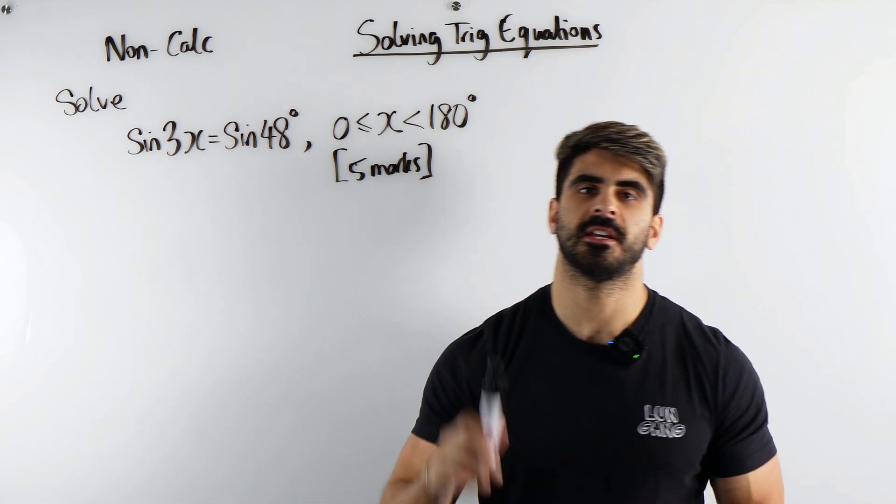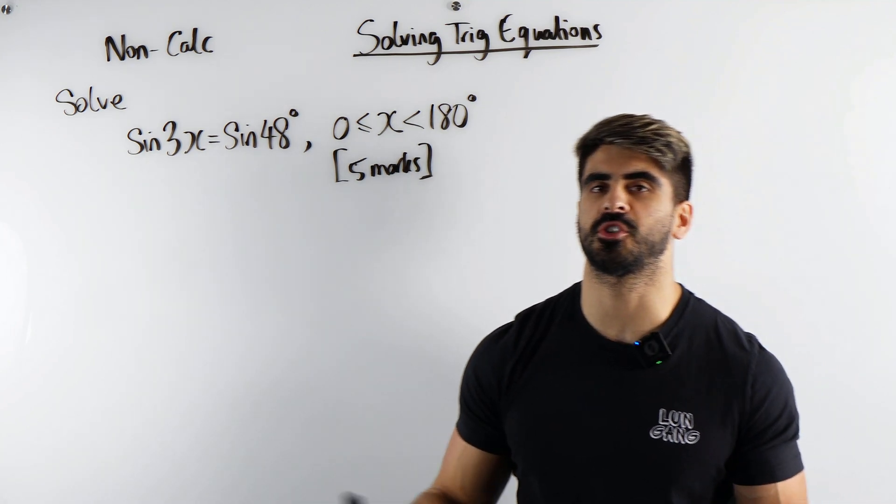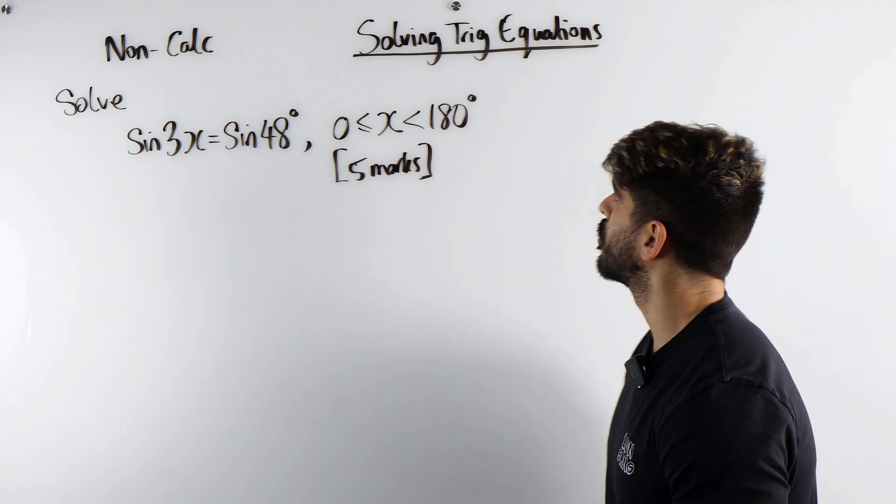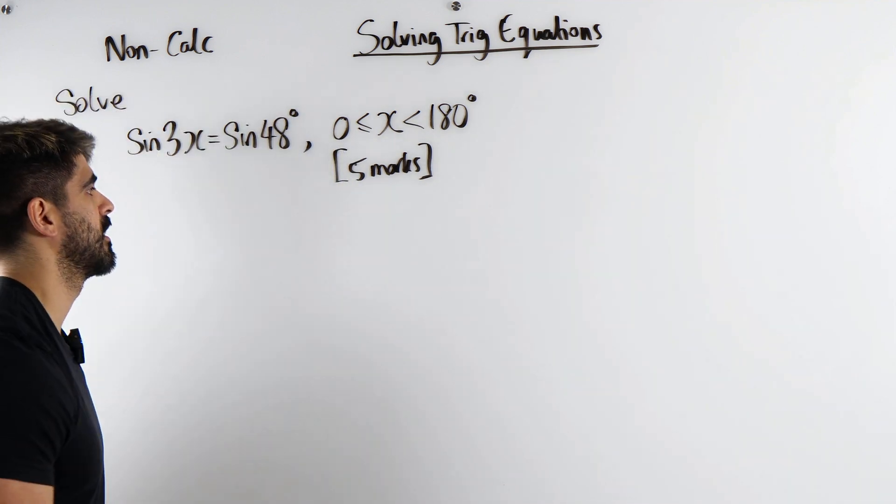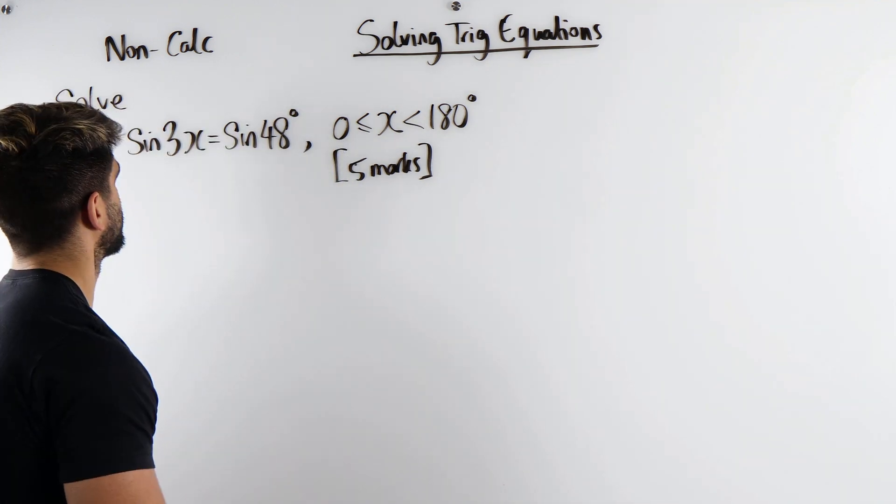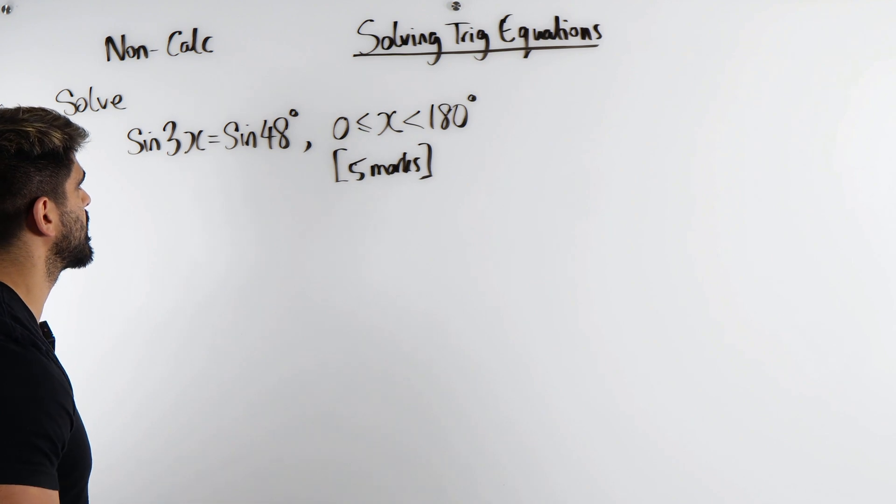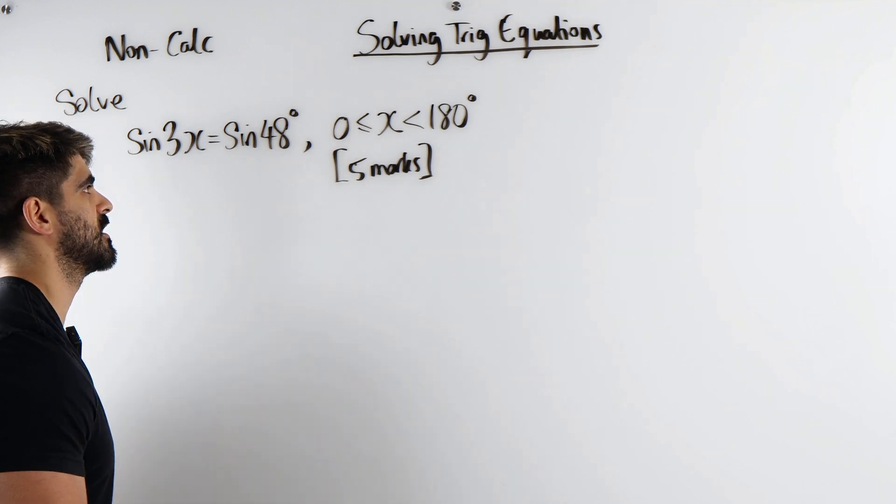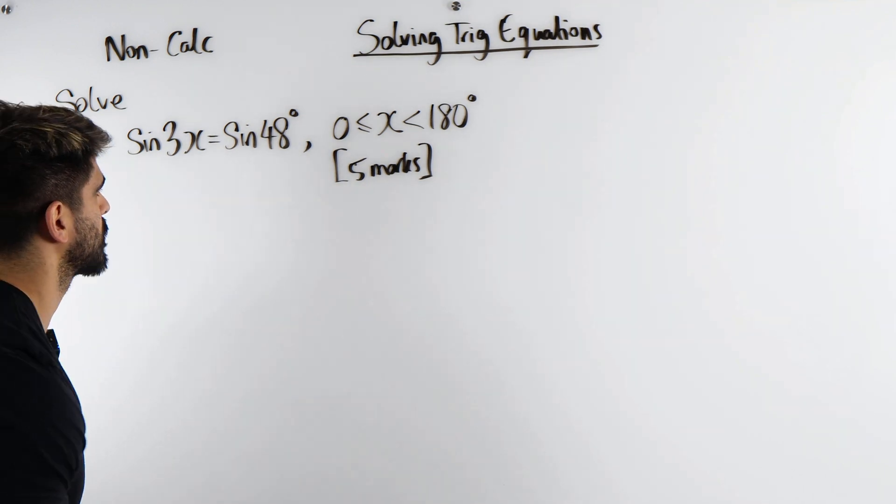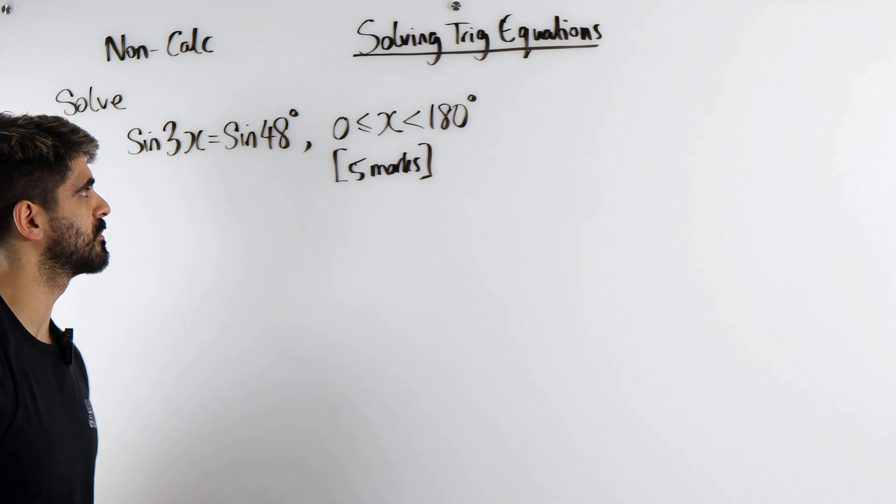If your teacher taught you cast diagrams, it's not looking good. Let me show you how we actually solve trig equations, not using rubbish diagrams that just go around in circles. So solve sin 3x = sin 48°, where x is an angle between 0 and 180 degrees for 5 marks. This is actually a non-calculator paper.